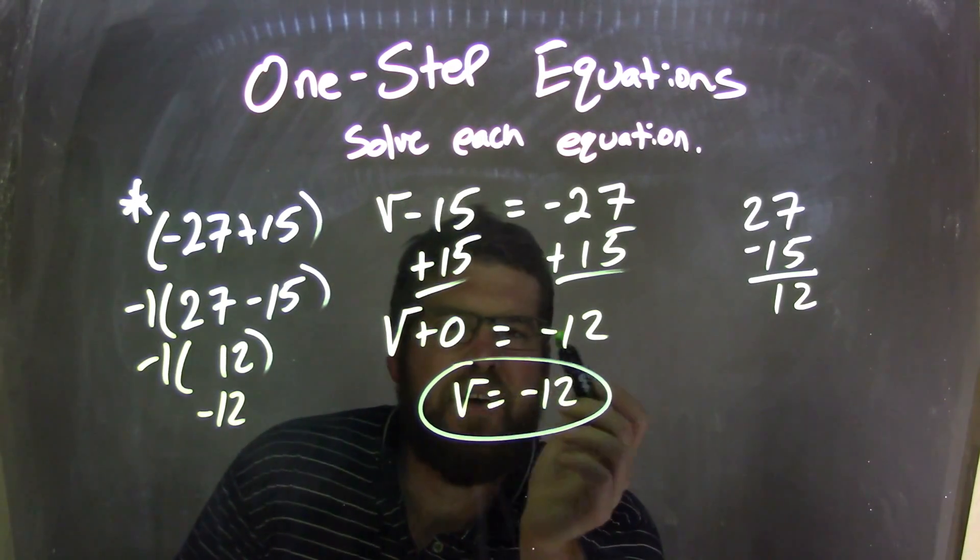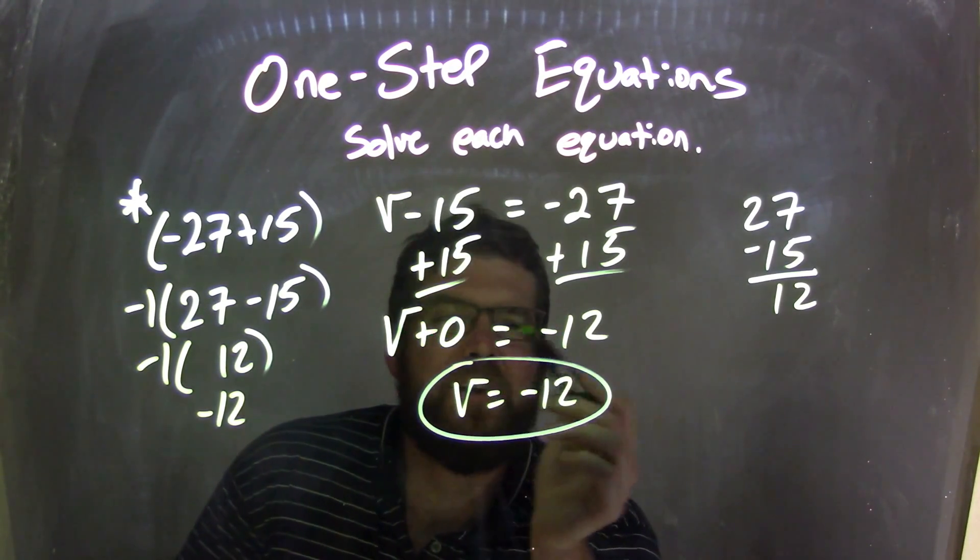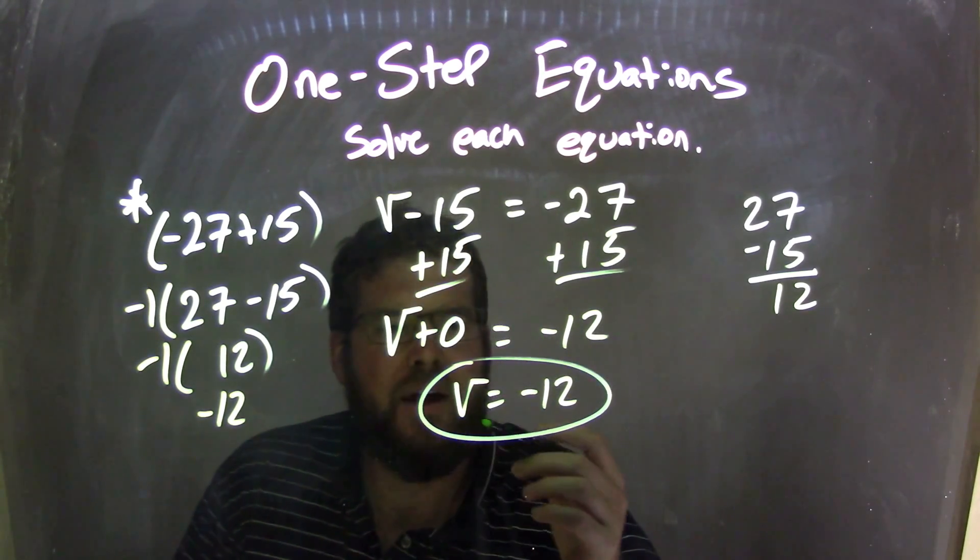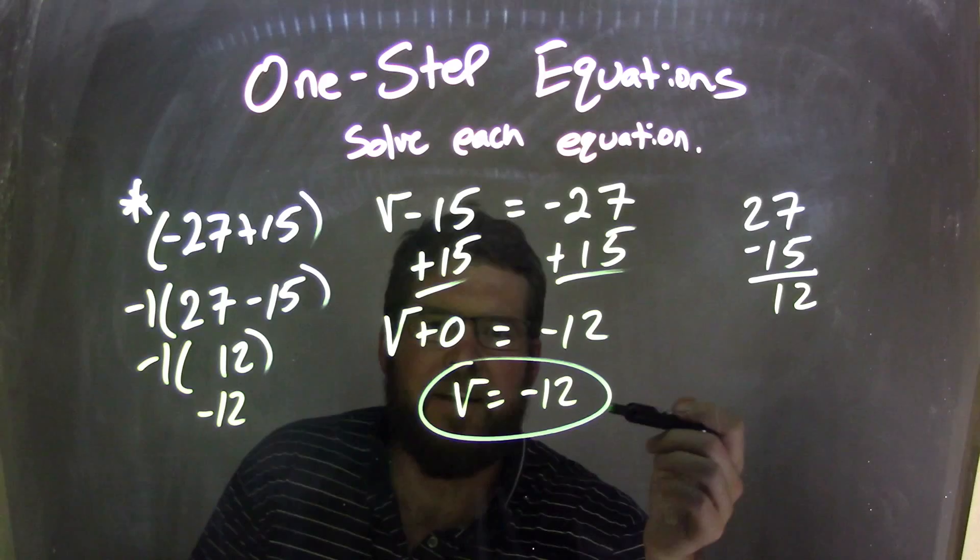And so when I simplify it here, I'm left with v plus 0 equals negative 12, don't need the 0 because adding 0 doesn't change anything, and now I'm left with the final answer on v equals a negative 12.